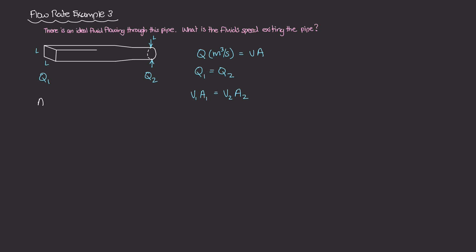So the area of 1, which is here on the left, is a square, and the dimensions of that square are L by L. So the area of 1 is going to be L squared.